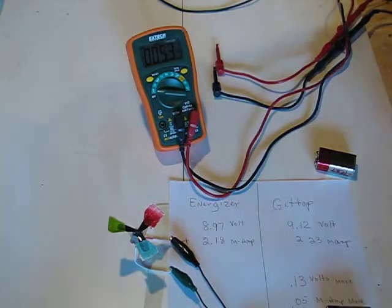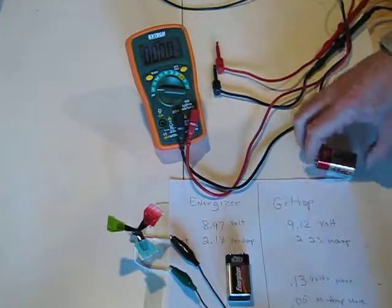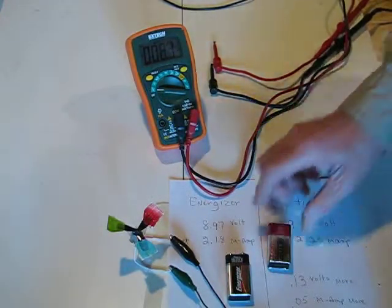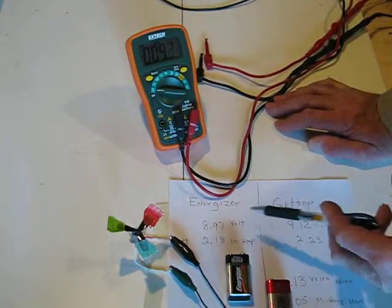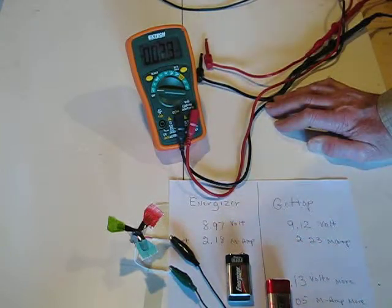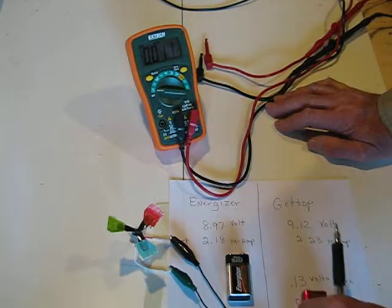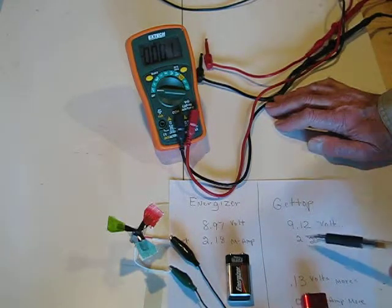Okay, this circuit's kind of got me baffled a little bit. What I have is two nine-volt batteries. To save time, I measured the volts and milliamps available on this battery at 8.97 volts at 2.18 milliamps, and the G-Top at 9.12 volts at 2.23 milliamps.